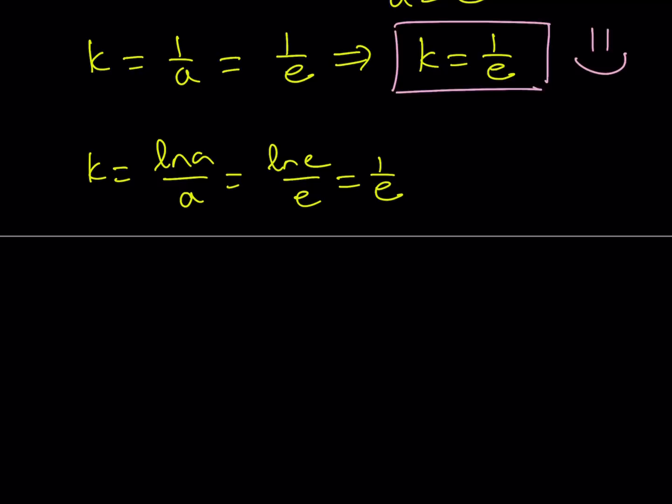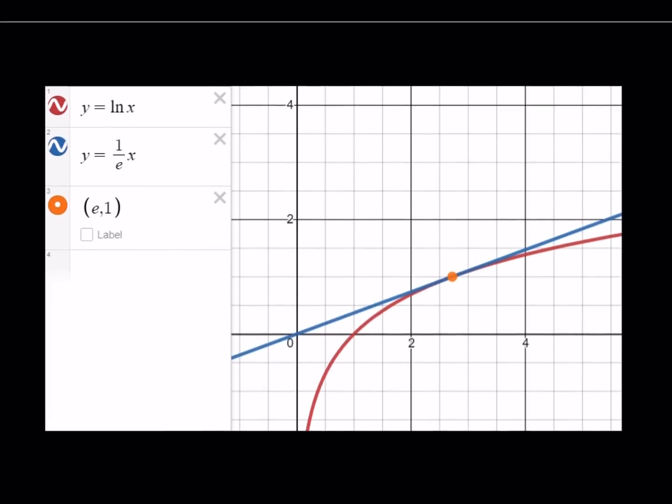And this actually doesn't bring us to the end of this video because I said I was going to show you the graph, so let me do that right now. The graph of y equals ln x is the red one, and the blue line is y equals kx. But since k equals 1 over e, you're basically looking at the graph of y equals 1 over e times x. And the intersection point, or the point of tangency, is e, 1.